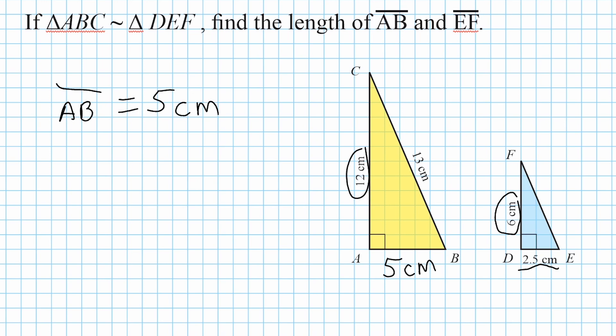Alright, now for line segment EF, which is the hypotenuse of this blue triangle. Well, the hypotenuse of the yellow triangle is 13 centimeters. And we know that we have to divide 13 by 2, because we had to divide 12 by 2 to get 6. We had to divide 5 by 2 to get 2.5. So we divide 13 by 2 to come up with 6.5. So line segment EF is equal to 6.5 centimeters.